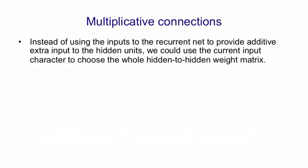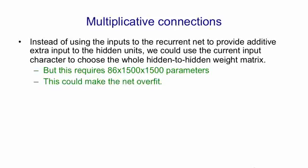So we're going to try and capture that by using multiplicative connections. Instead of using the character inputs to the recurrent net to give extra additive input to the hidden units, we're going to use those characters to swap in a whole hidden to hidden weight matrix. The character is going to determine the transition matrix. Now if we did that in the naive way, we'd have each of the 86 characters define a 1500 by 1500 matrix. And that would be a lot of parameters. If we have that many parameters, the net's likely to overfit unless we run it on a huge amount of text for which we might not have time.